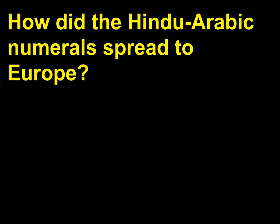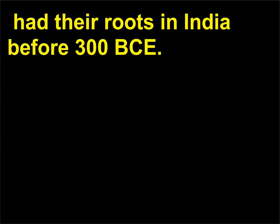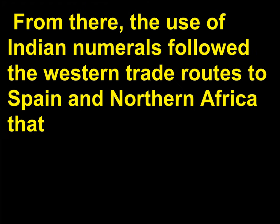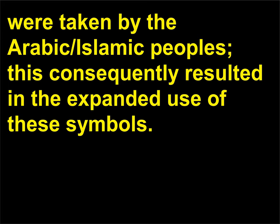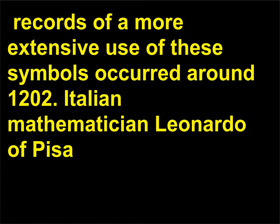How did the Hindu-Arabic numerals spread to Europe? Hindu-Arabic numerals, often less accurately called Arabic numerals or numbers, had their roots in India before 300 BCE. From there, the use of Indian numerals followed the Western trade routes to Spain and Northern Africa taken by the Arabic-Islamic peoples, which consequently resulted in the expanded use of these symbols. It took several more centuries to spread the idea to Europe, although the Spanish used some Hindu-Arabic symbols as early as the late 900s.